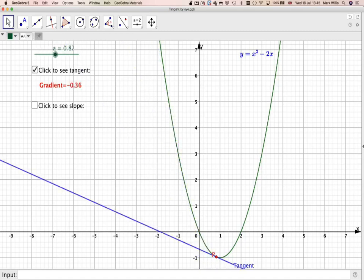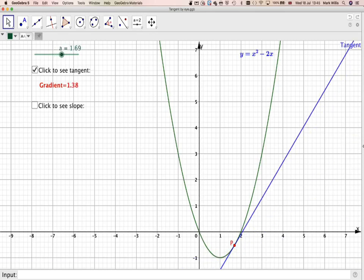Here, for example, the gradient is negative. Here the gradient will be equal to 0, which is one of the questions we have to answer. And here the gradient will be positive.